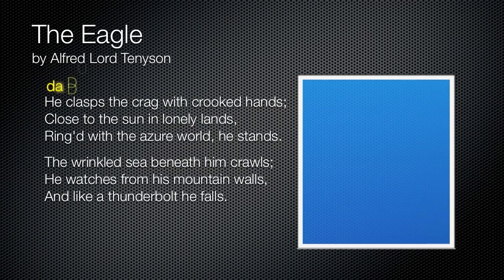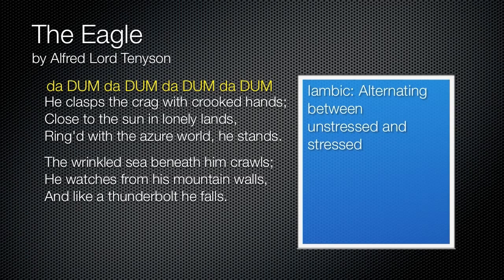The other thing I want you to see is the meter. "He clasps the crag with crooked hands" — it sounds like da-dum, da-dum, da-dum, da-dum. That is called iambic — alternating between unstressed and stressed syllables. If you ever get stuck on where the stress is, a good rule of thumb is to stick your hand under your chin. As you read, when your chin moves down, that generally is the stress. "The wrinkled sea beneath him crawls" — so you can gain an understanding for the stress.